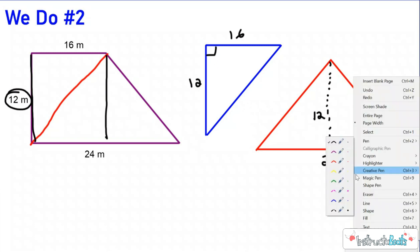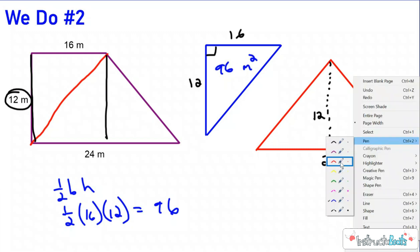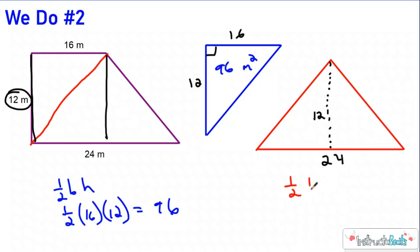So here for the blue one, we're going to do one half base times height. So one half 16 times 12. And when you solve that out, you get an area of 96. So our area here is going to be 96 meters squared. For the red one, again, we're going to have one half base times height. So we're going to have one half and then 24 times 12. And when you solve that out, you're going to get 144 meters squared. So if this is 96 meters squared, and that's 144 meters squared, when we add that together, we get a total area of 240 meters squared.